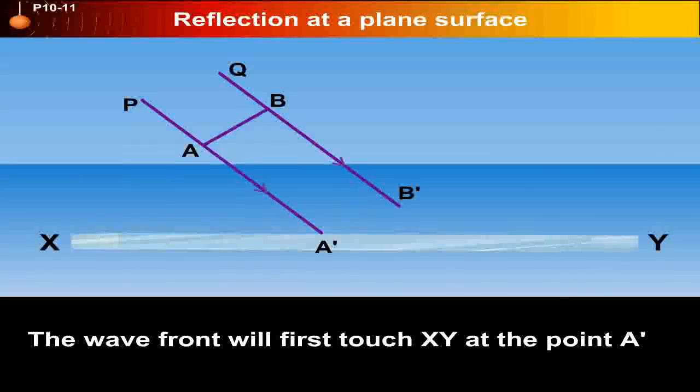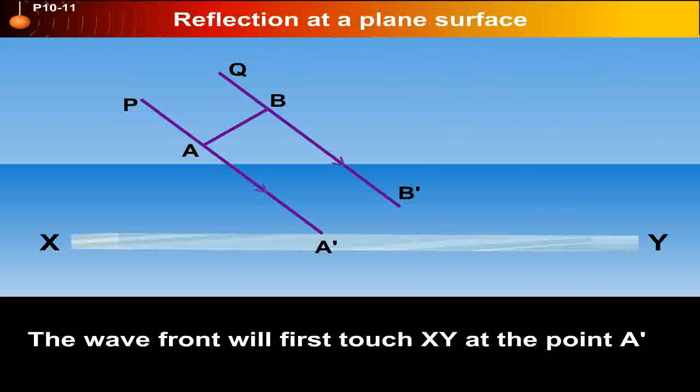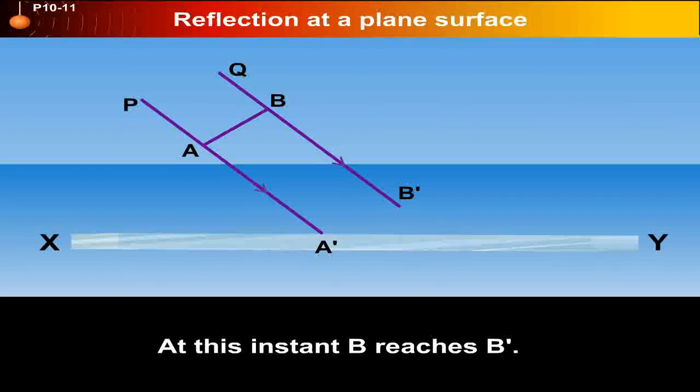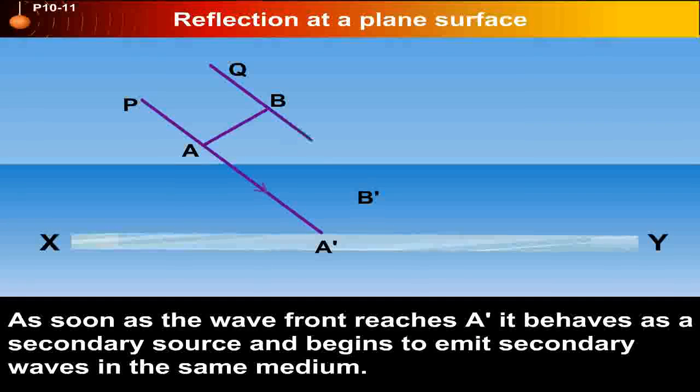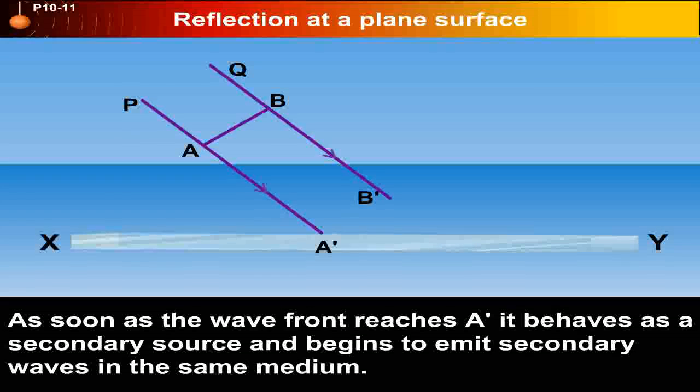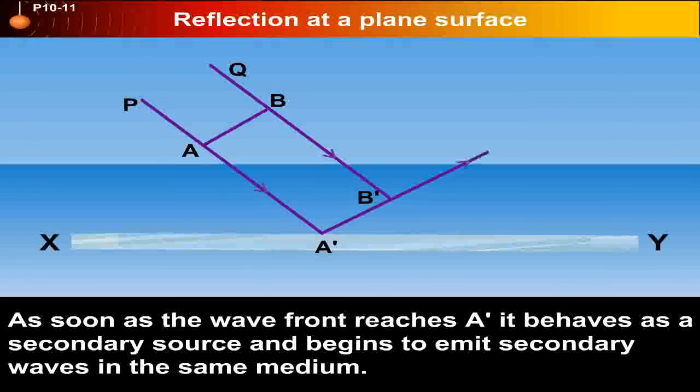The wavefront first reaches XY at point A'. At this instant, B reaches B'. As soon as the wavefront reaches A', it behaves as a secondary source and begins to emit secondary waves in the same medium.